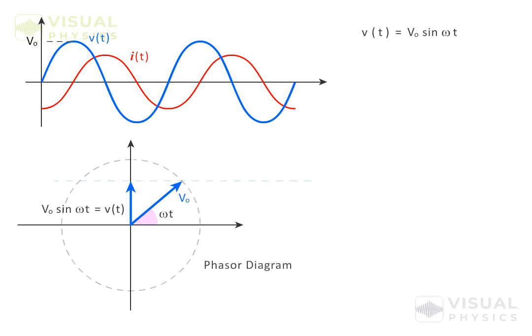This is called a phasor diagram. Here, the length of this vector is equal to the amplitude of voltage, and it rotates about the origin with constant angular velocity equal to ω.